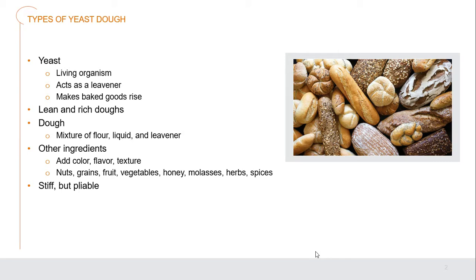We generally make two different types of doughs: lean doughs and rich doughs. The basic mixture of dough is flour, some form of liquid, and the leavener — in this case, yeast. Other ingredients we can add include nuts, grains, fruits, vegetables, honey, molasses, herbs, spices, cheeses, and oils, which add color, flavor, and texture. The actual dough itself should be stiff but pliable in order for us to work it.